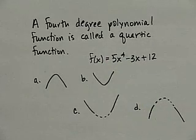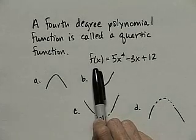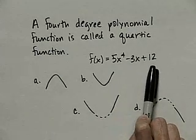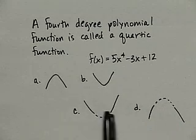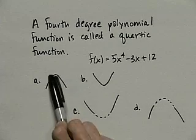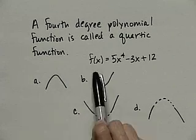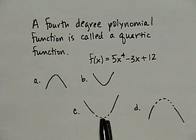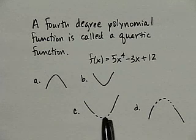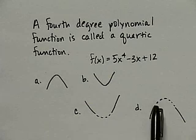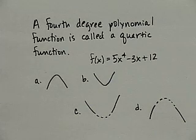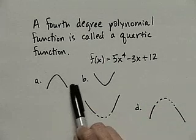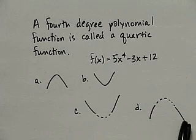A fourth degree polynomial is called a quartic function. An example of a quartic is something like f of x equals 5x to the fourth minus 3x plus 12. The graph of a quartic is going to fit one of these four pictures. It may be smooth and completely turned upside down or right side up, or it may have this shape. These dashed lines indicate that the behavior is smooth but irregular on this interval. For this fourth degree polynomial, at both ends of the polynomial in each of these graphs, the behavior of the function is the same.